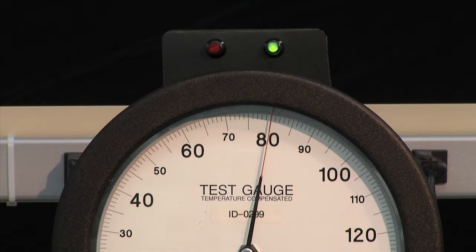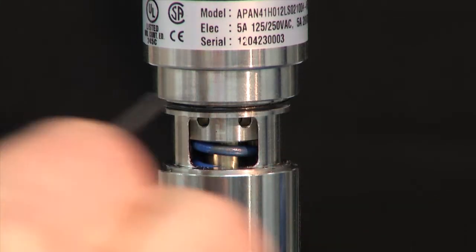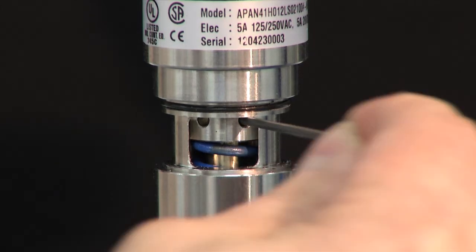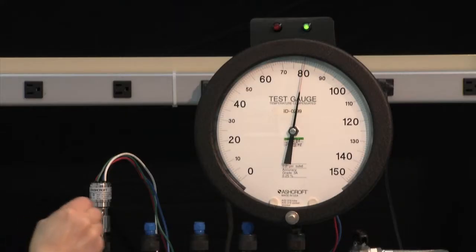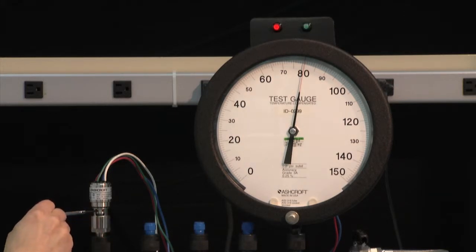So we are going to increase the set point by putting a small tool into the slot and turning it clockwise to increase the set point. We will continue to do this until the switch resets, which it just did.